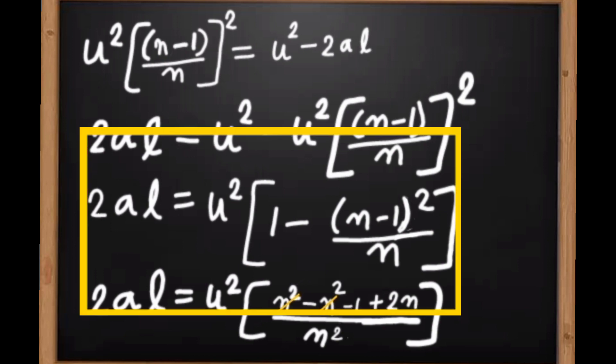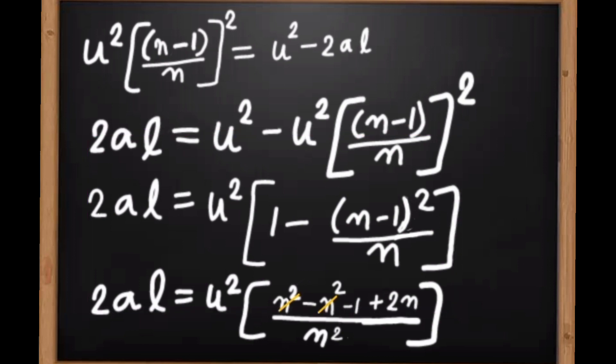Now using identity of (a-b)² for (n-1)², we get 2al = u²(2n-1)/n².